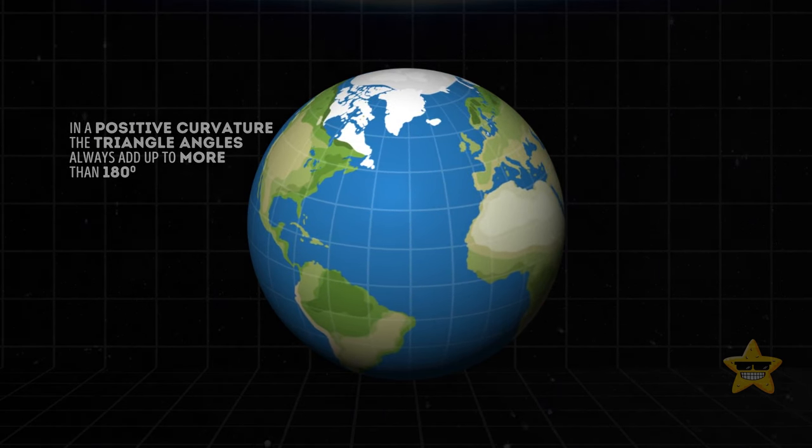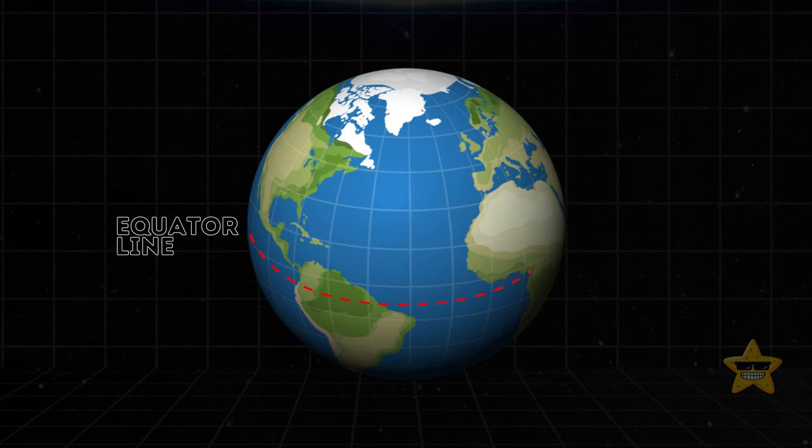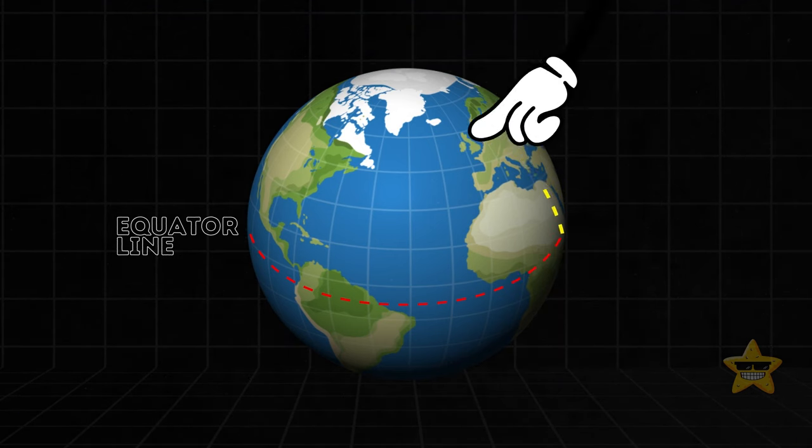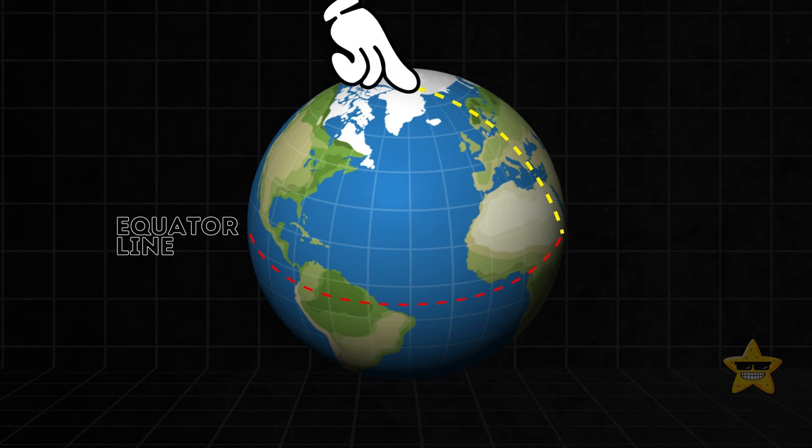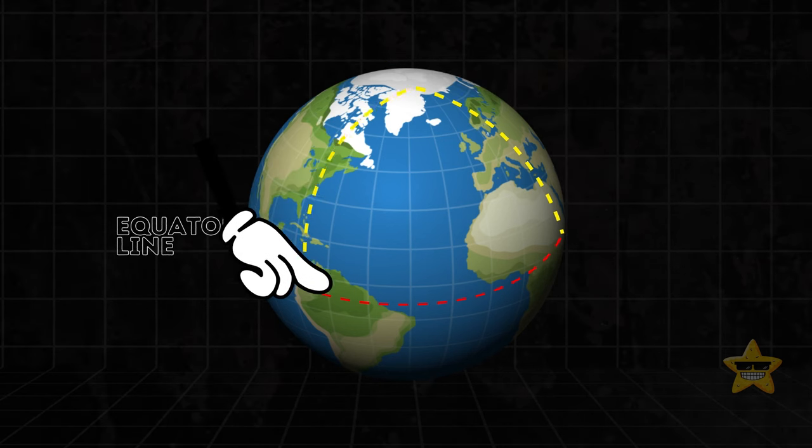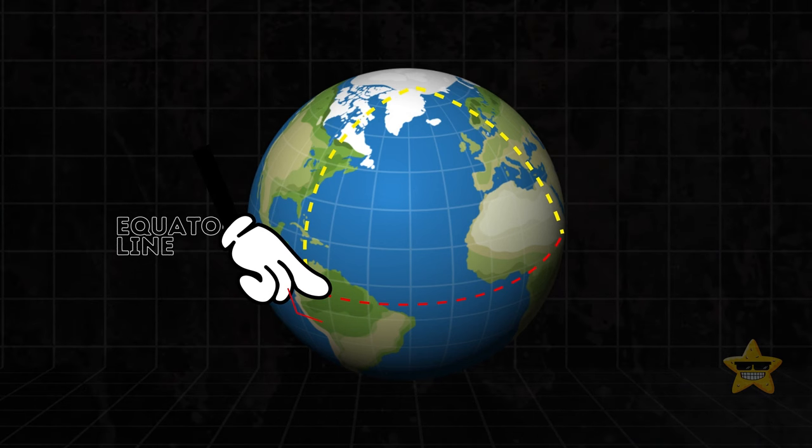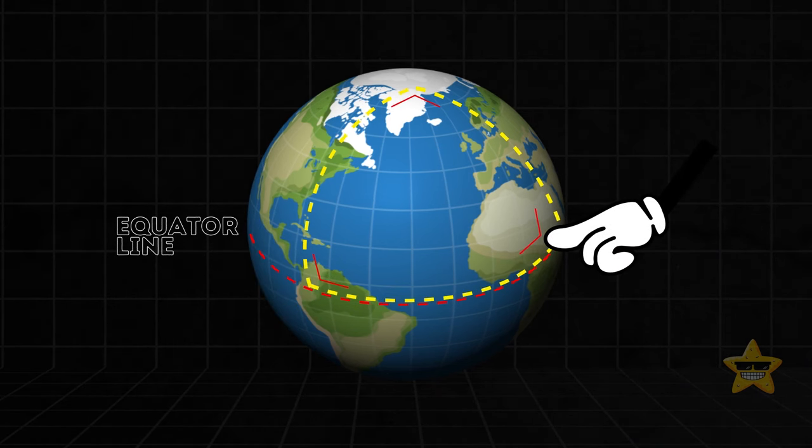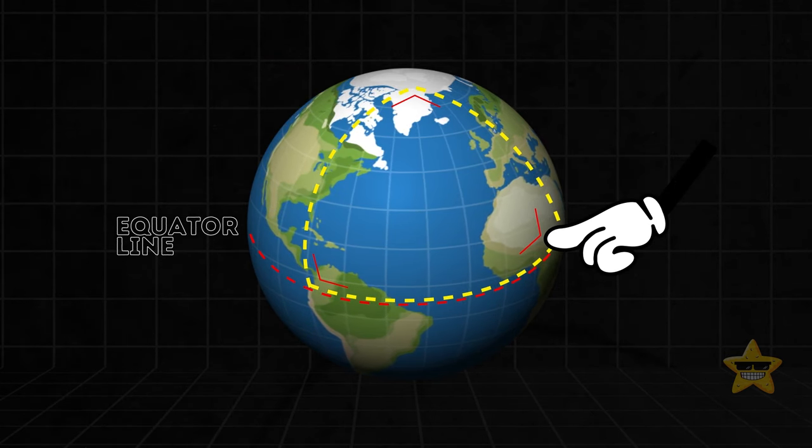If you have a terrestrial globe at home, you might find it easier to understand this next experiment. Start by placing your finger at the Earth's equator, then trace a line to the North Pole, make a 90-degree turn, and return to the equator. Make one more 90-degree turn, and walk back to your starting point. This journey only needed 3 turns, unlike the 4 turns in the flat universe scenario.